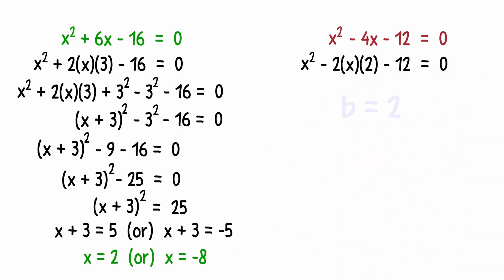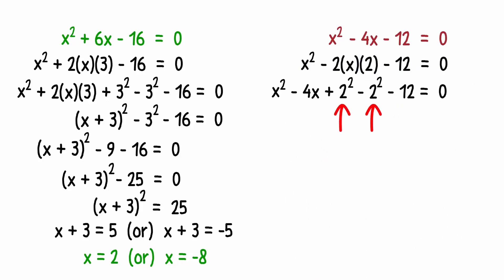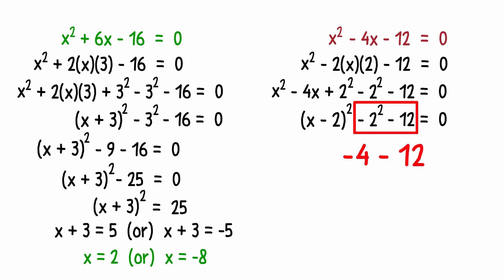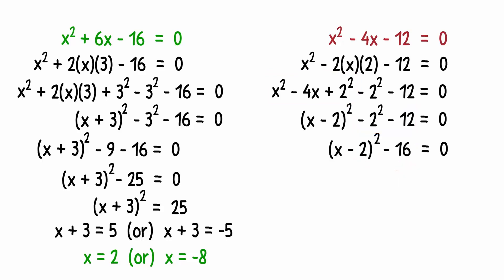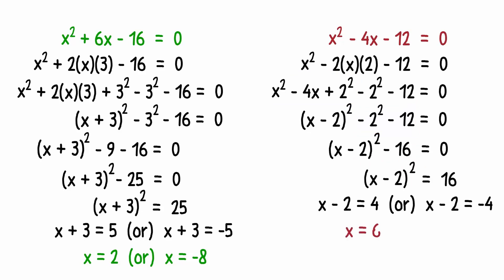And now we know that b is 2. So we add 2² and then also subtract 2² to keep the equation unchanged. Now look at the first three terms — do we get a perfect square? Yes we do. This part can be written as (x - 2)², and negative 4 minus 12 will be negative 16. You should get the roots as 6 and negative 2.